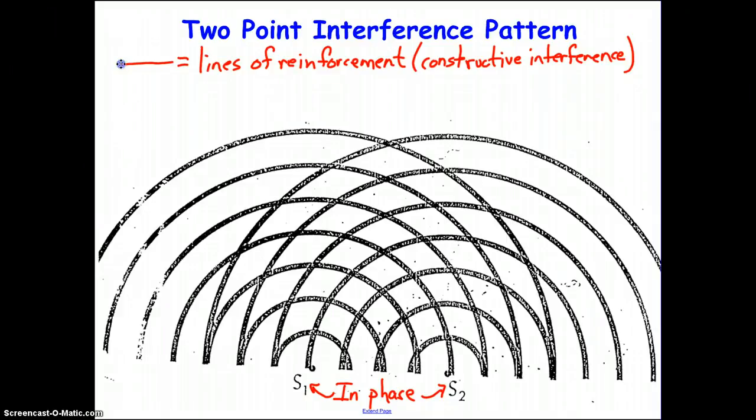Let's start to draw some of these on this diagram. Where would they be? Well, we already saw from the simulation that one is right down the middle. So we're looking for places where the crests from source 1 and the crests from source 2 line up.